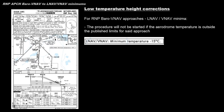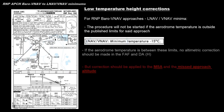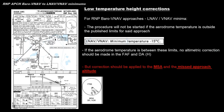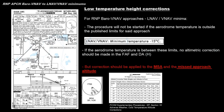However, the BARO-VNAV approach has a special characteristic: if the outside temperature is within the limits indicated on the approach chart, it is not necessary to apply altitude corrections to the final approach fix or decision altitude. But we do have to apply corrections to other altitudes affected in the procedure, such as MCA or the missed approach altitude. You can find the altimeter correction table in the 737 FCOM in the supplementary procedure section, under adverse weather and cold temperature.